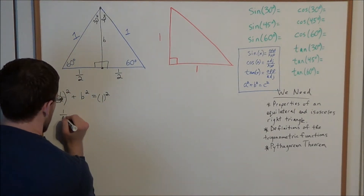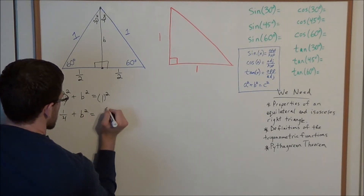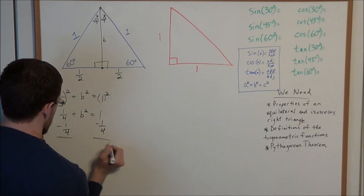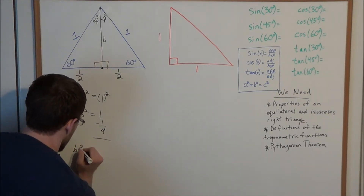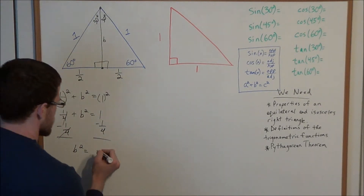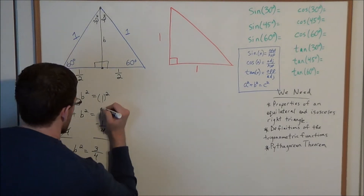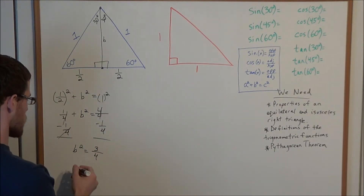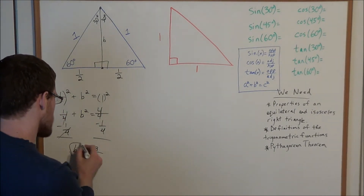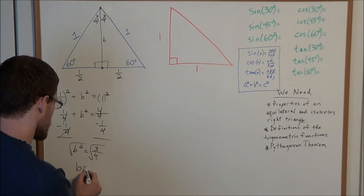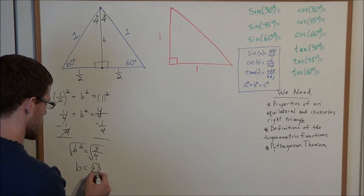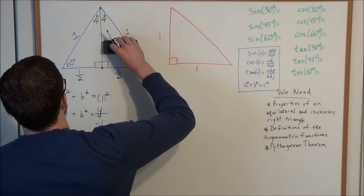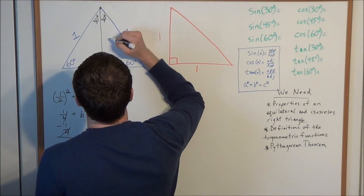So we have one half squared, which is one fourth, plus b squared equals one squared, which is one. Subtracting one fourth from both sides gives b squared equals three fourths — a quick check is four over four minus one over four equals three over four. Taking the square root of both sides, b equals the square root of three divided by the square root of four, and the square root of four is two. So b equals the square root of three over two.